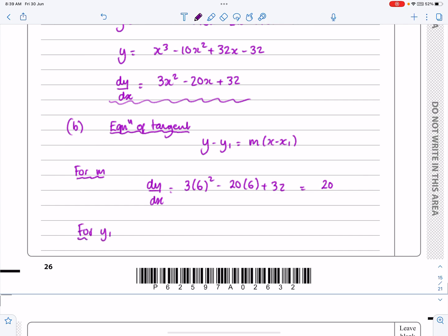For y1, that's going back to the equation here. y1 is going to be equal to—again, putting x equals 6 in—but this time it's 6 cubed minus 10 lots of 6 squared plus 32 lots of 6 minus 32.